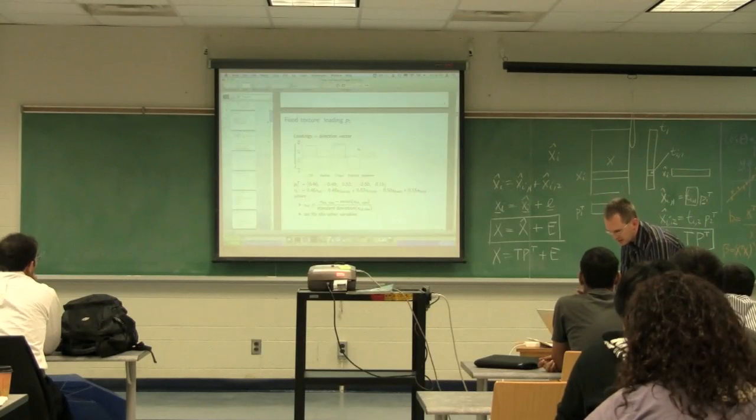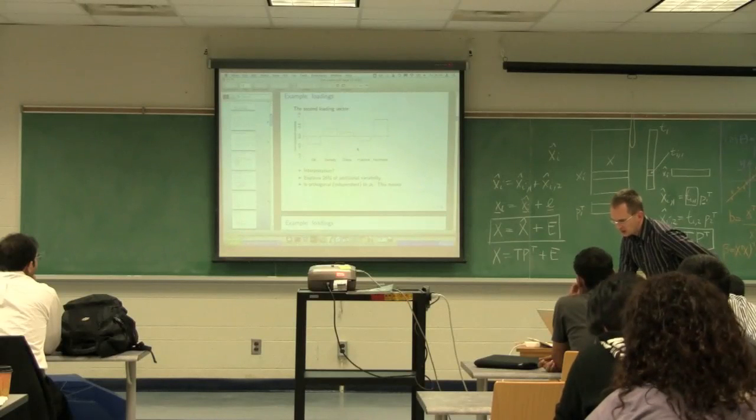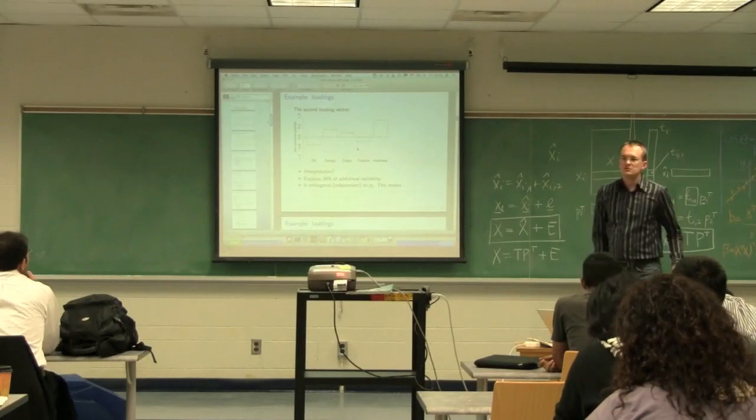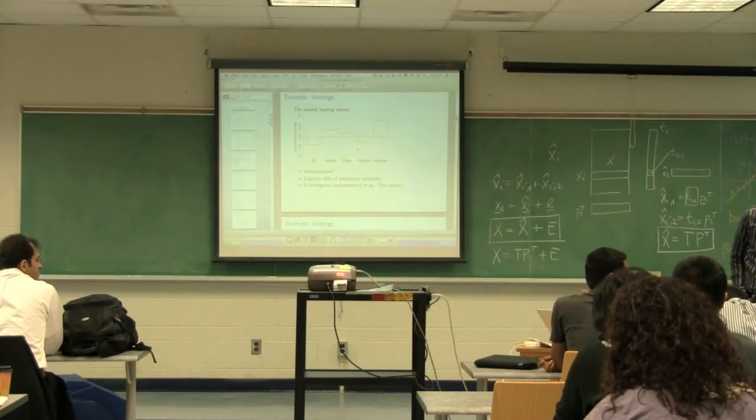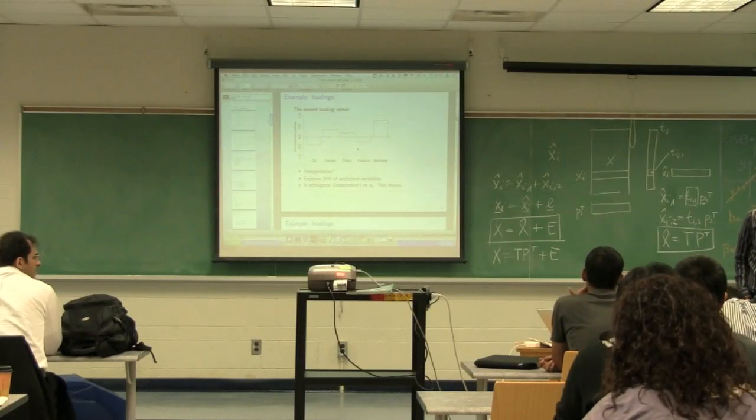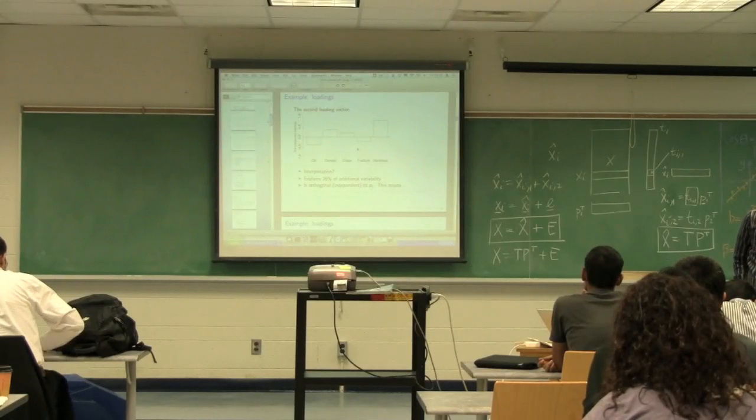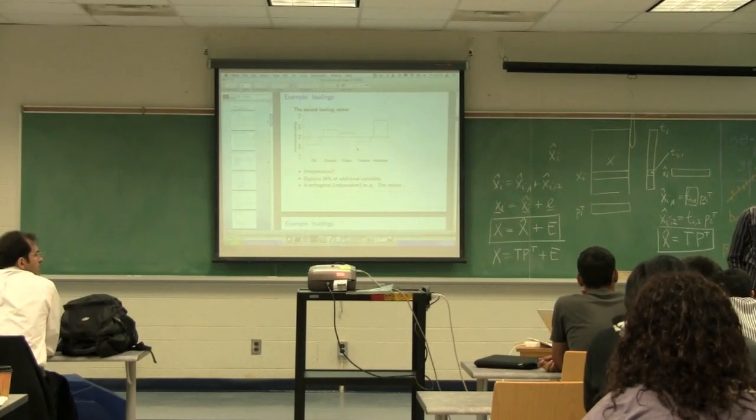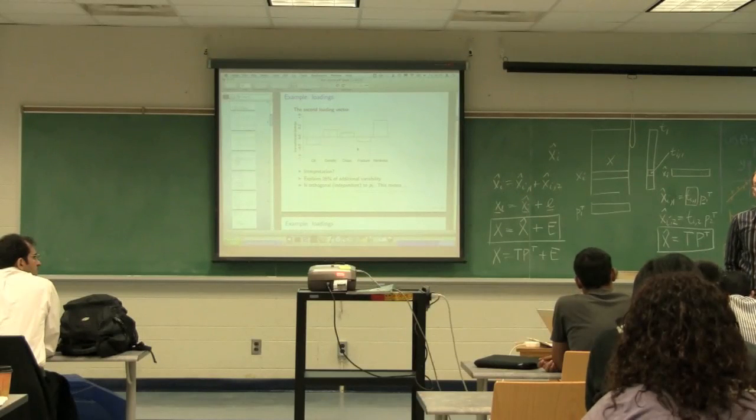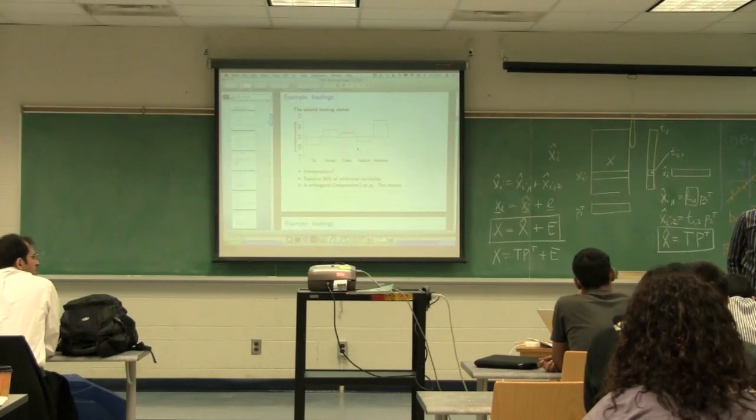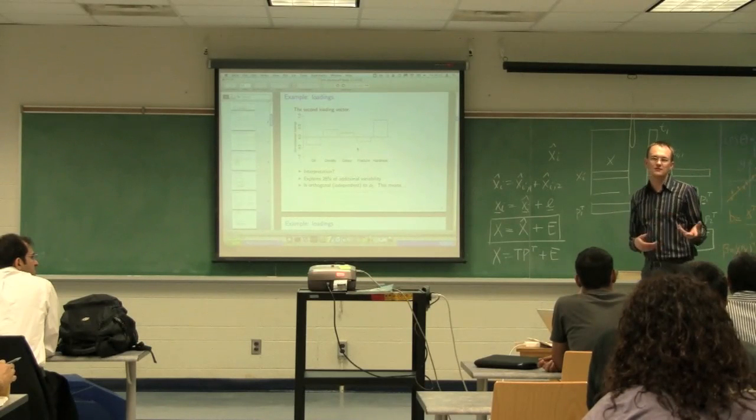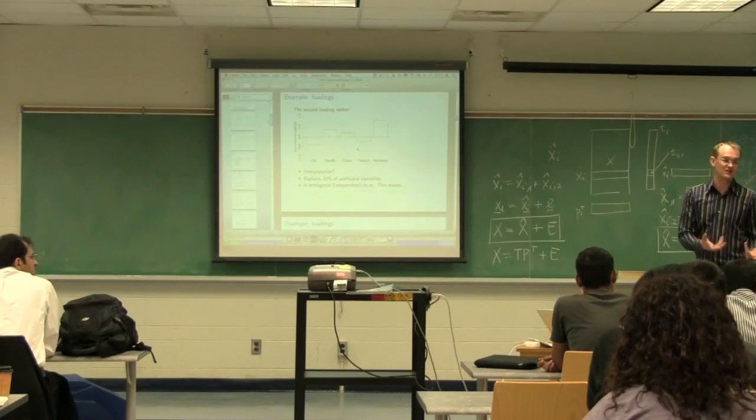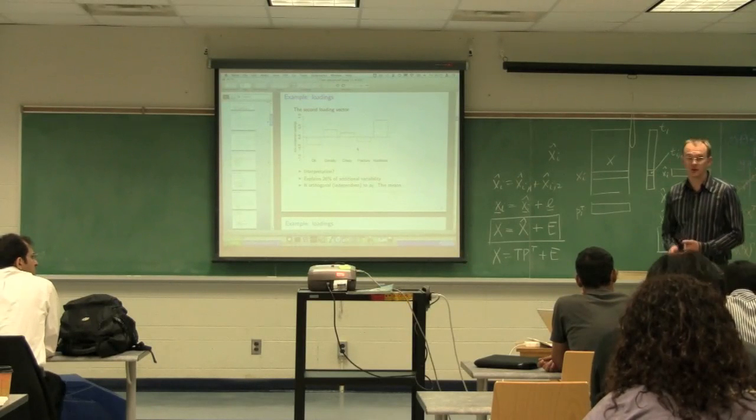The next question asks for the T2 loading vector. High P2 would be really hard, not very oily. P2 mainly explains the hardness direction. Hardness explains an additional 26% of the data. The key thing is that second component P2 is orthogonal to P1.